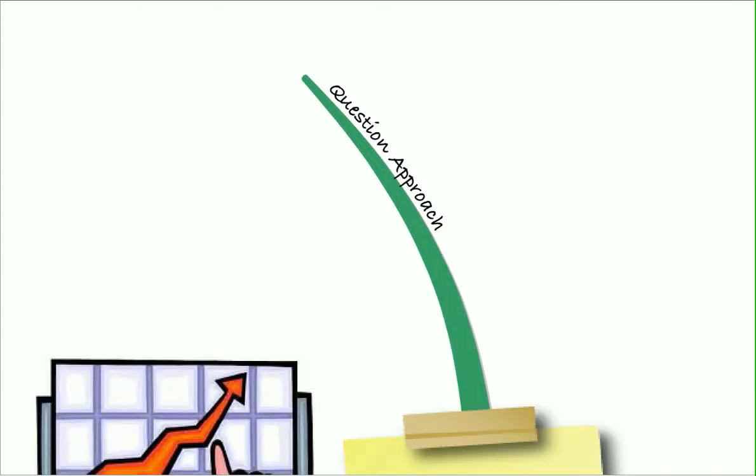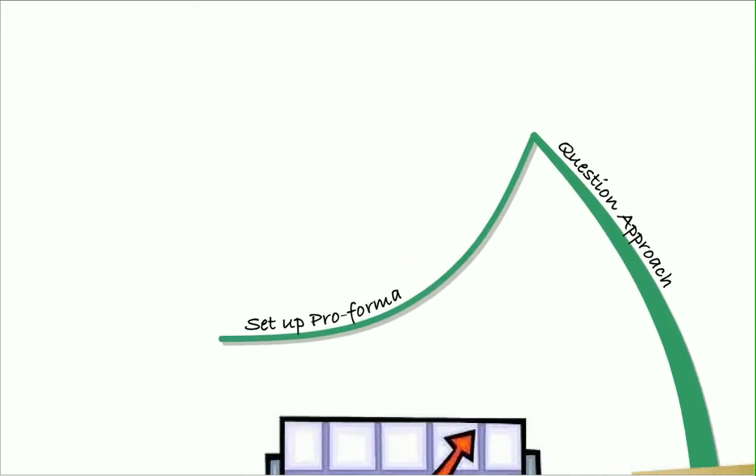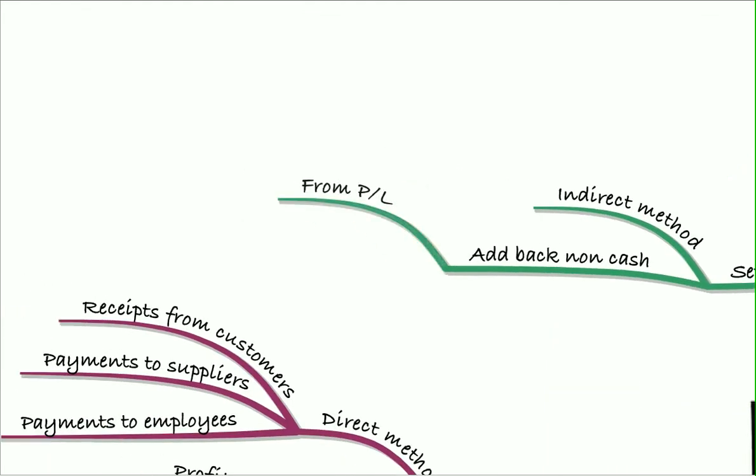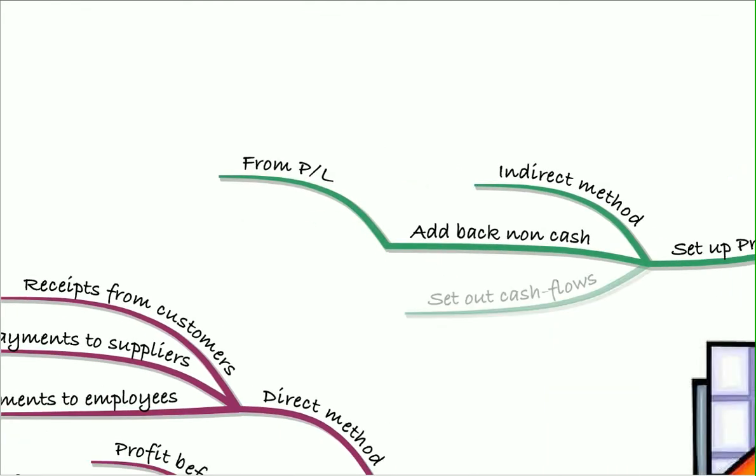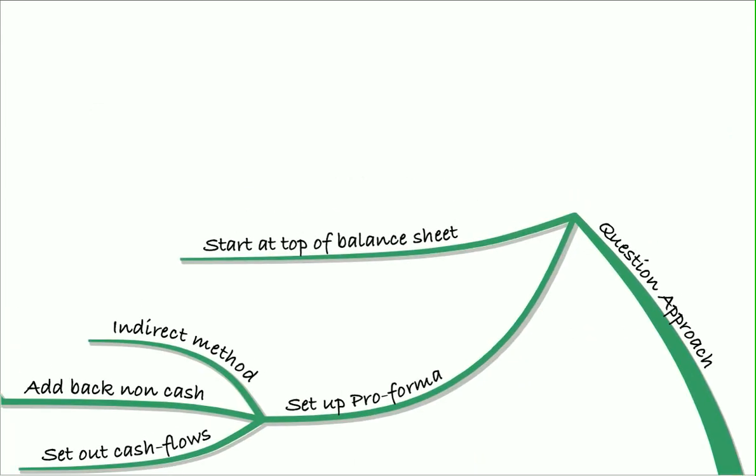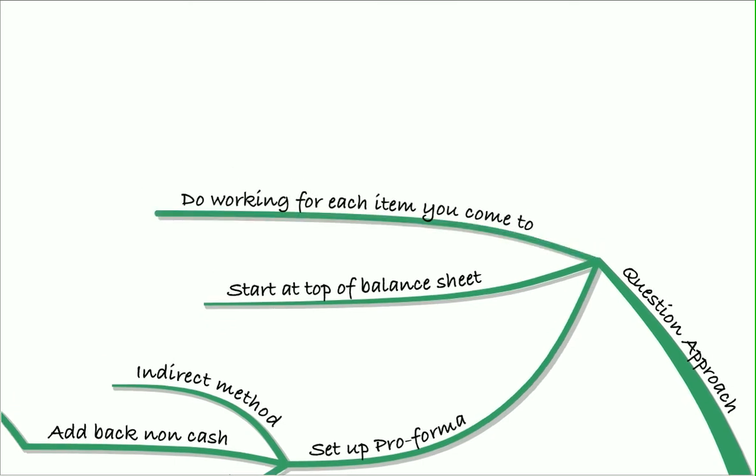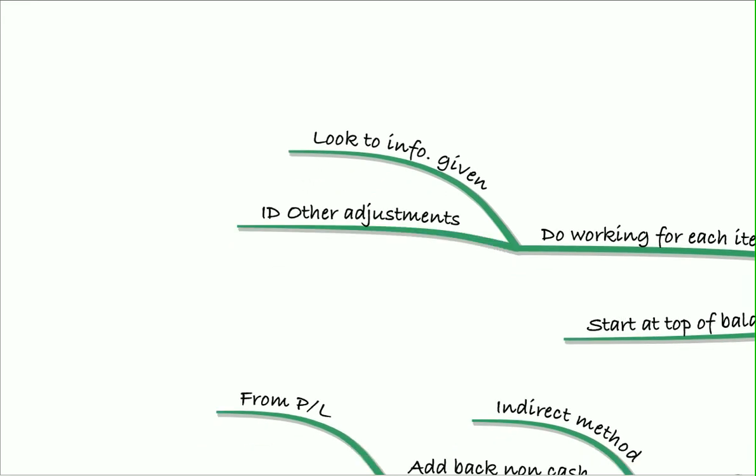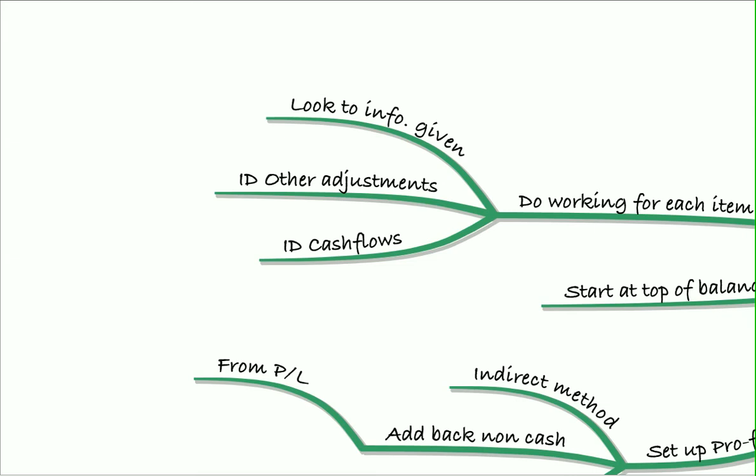Remember, the key to cash flows is your question approach. You set up your pro forma for the indirect method, add back all non-cash items from the profit and loss account, and set out your cash flows that reconcile down to cash flows from operating activities. You'll then start at the top of the balance sheet and do a working for each item you come to. Look at the information given in the question, identify any adjustments you need to put through, and that will enable you to identify the cash flows. If you work your way down the balance sheet, you'll get everything there is to get and you should pass the question very easily.